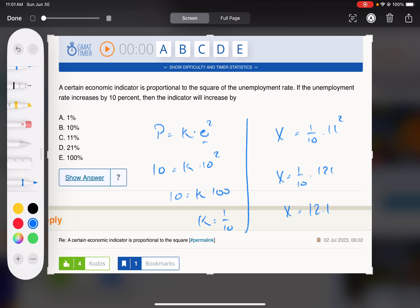So we look at what changed. It went from our economic indicator being 10 to it being 12.1. So that's a 21% increase. 10 to 12.1 goes up 2.1 out of 10, that's 21%. Done.